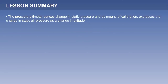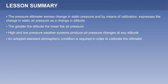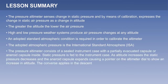The pressure altimeter senses change in static pressure and by means of calibration expresses the change in static air pressure as a change in altitude. The greater the altitude, the lower the air pressure. High and low pressure weather systems produce air pressure changes at any altitude. An adopted standard atmospheric condition is required in order to calibrate the altimeter — the International Standard Atmosphere, or ISA. The pressure altimeter consists of a sealed instrument case with a partially evacuated aneroid capsule inside. Static pressure is fed to the instrument case. As altitude increases, the static pressure decreases and the aneroid capsule expands, causing a pointer on the altimeter dial to show an increase in altitude. The converse applies in the descent.